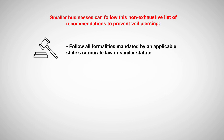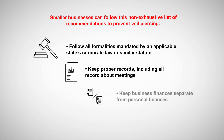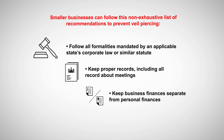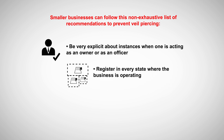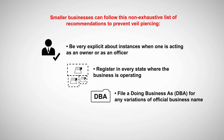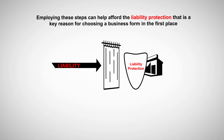Follow all formalities mandated by an applicable state's corporate law or similar statute. Keep proper records, including all records about meetings. Keep business finances separate from personal finances. Be very explicit about instances when one is acting as an owner or as an officer. Register in every state where the business is operating. And file a doing business as, a DBA, for any variations of the official business name. While it's not always possible to predict with precision how a court will view a situation, employing these steps can help afford the liability protection that is a key reason for choosing a business form in the first place.